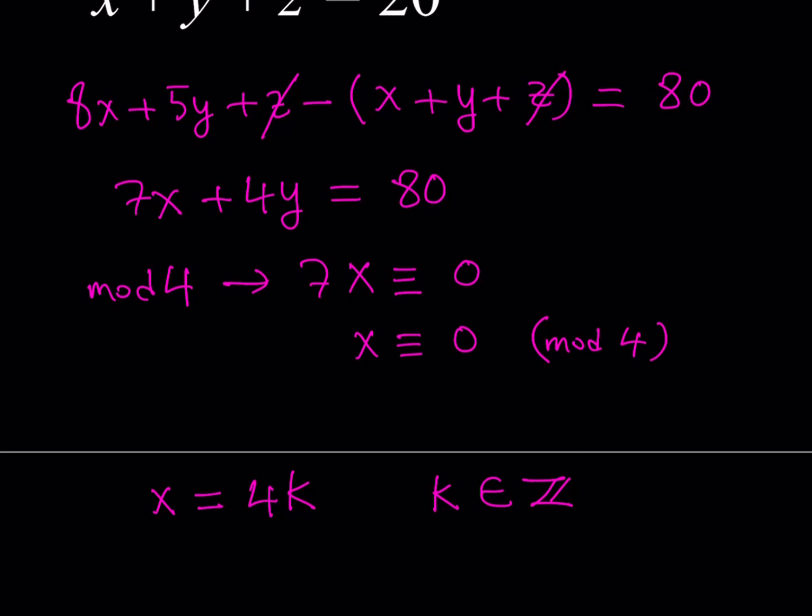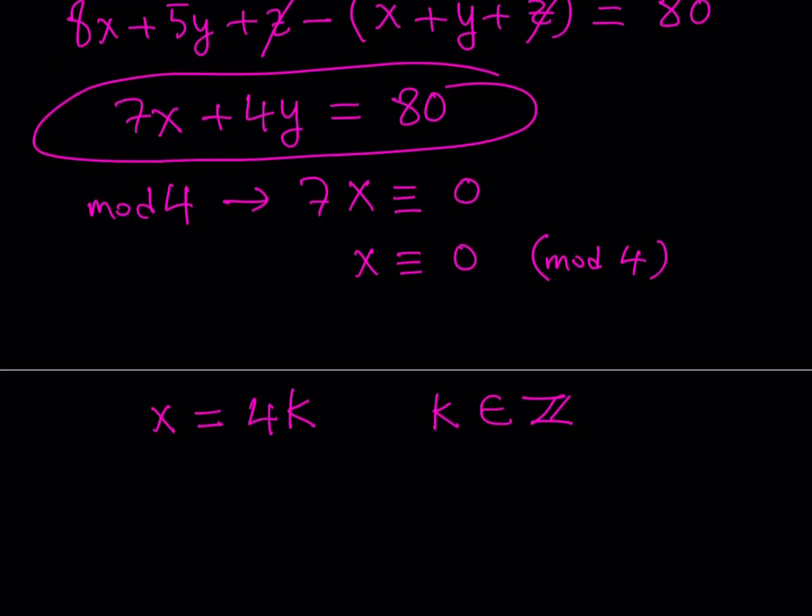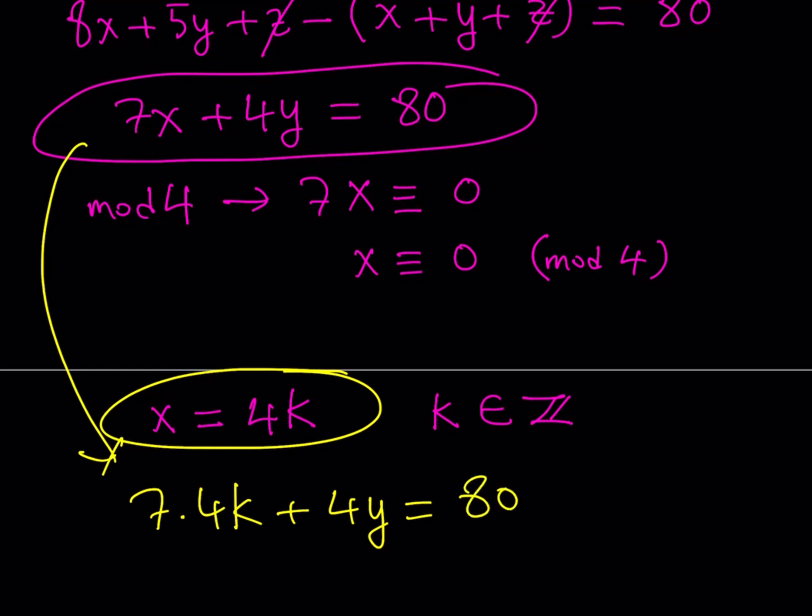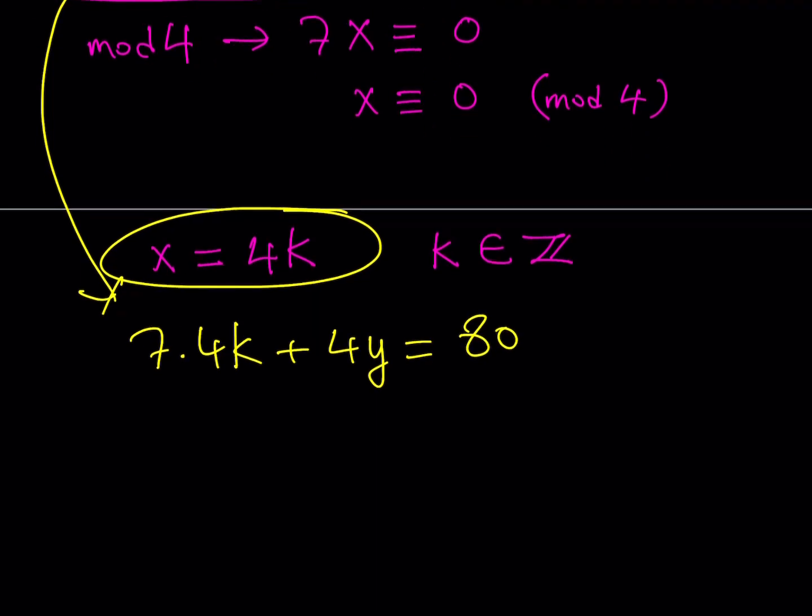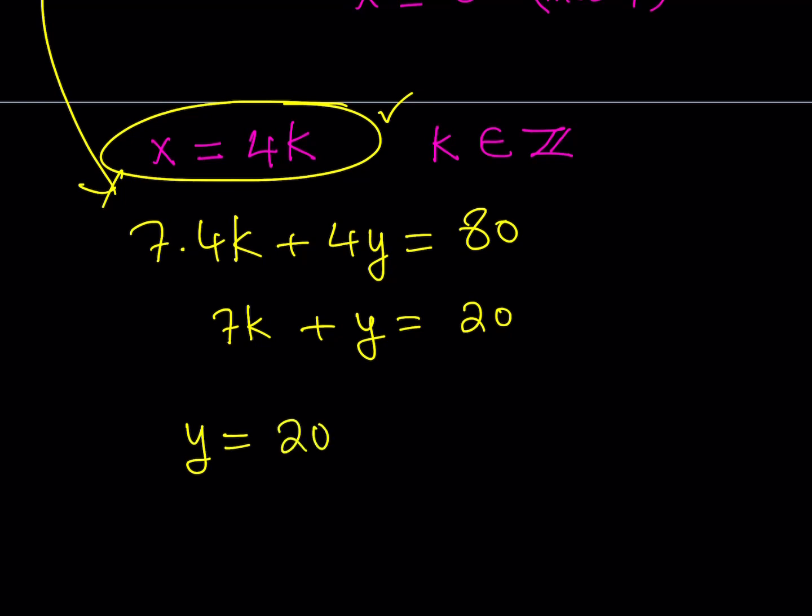To find y, we need to substitute this into our equation and solve for y from there. Let's substitute that value. 7 times 4k plus 4y equals 80. We can divide everything by 4, and that gives you 7k plus y equals 20. Notice we found x in terms of k, which is a parameter. If you isolate y, you'll get y equals 20 minus 7k. This is the method for solving linear Diophantine equations.